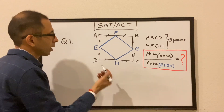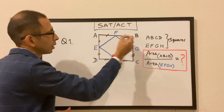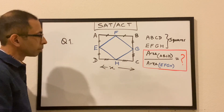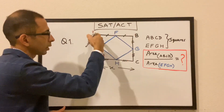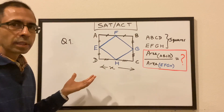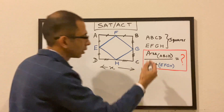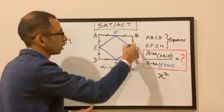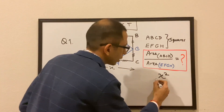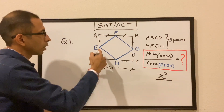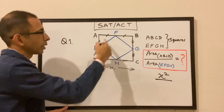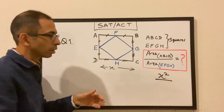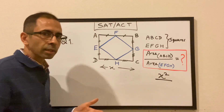Let's assume that the length of the outside square is X. Then the area of the outside square would be X squared — so X squared is the area of ABCD. Now let's find the area of the inside square EFGH also in terms of X, so that eventually the X squared terms will cancel out.